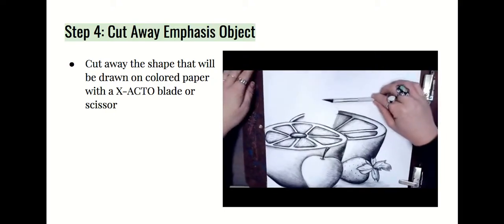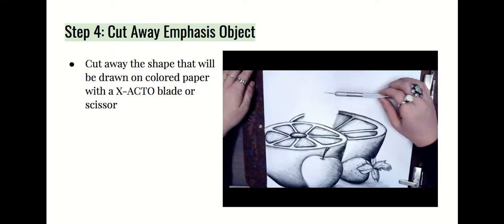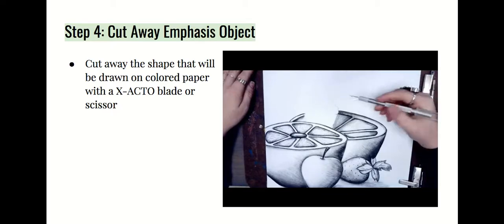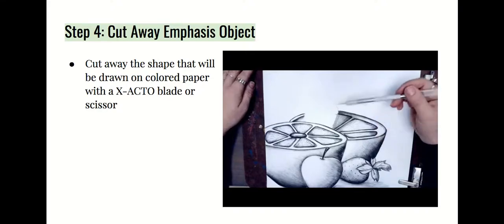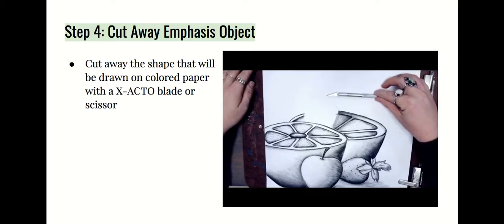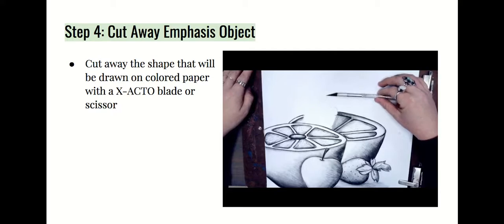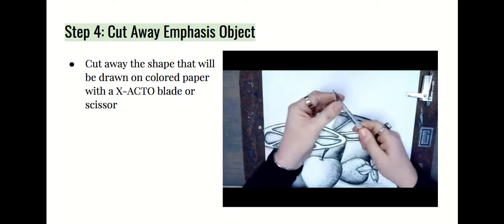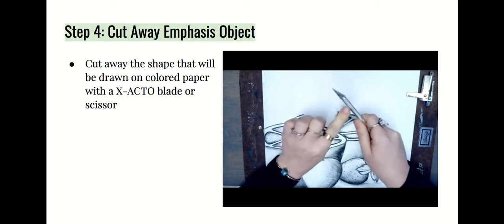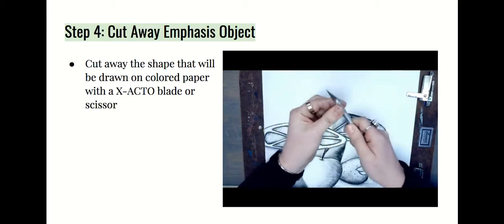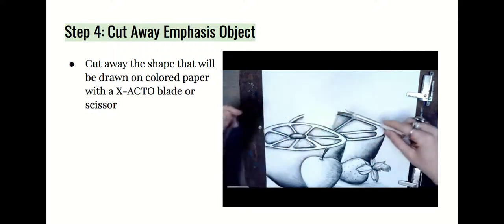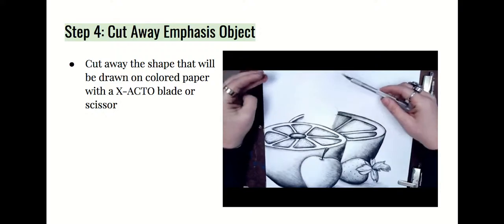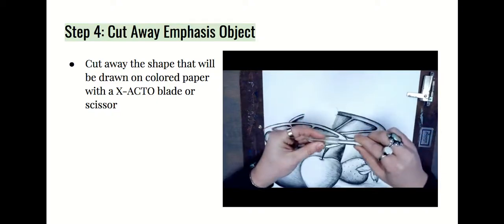These blades cannot leave the classroom as they are considered a weapon if they do. Check to make sure the blade is tight and secure — there is a spot where you can twist and the blade comes out, so make sure that part is tightly twisted and the blade cannot move. When not using the blade or walking with it, always keep it capped. Also always protect your table — use a rubber mat or cutting board — because you could potentially cut the table.